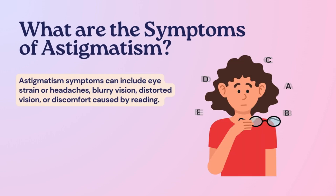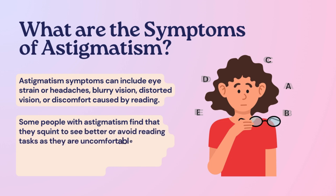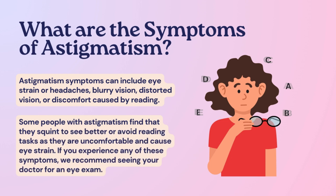What are the symptoms of astigmatism? Astigmatism symptoms can include eye strain or headaches, blurry vision, distorted vision, or discomfort caused by reading. Some people with astigmatism find that they squint to see better or avoid reading tasks as they are uncomfortable and cause eye strain.